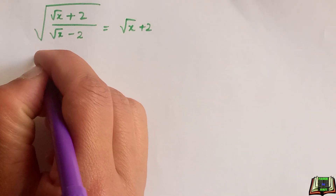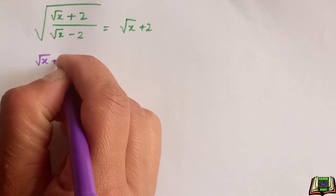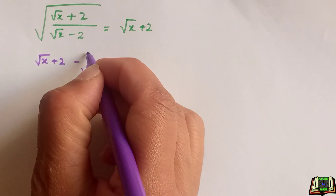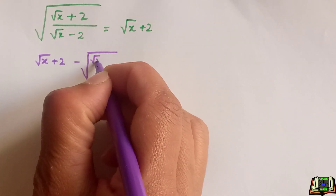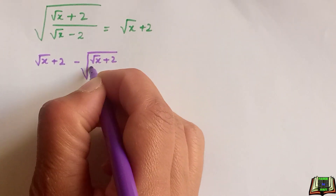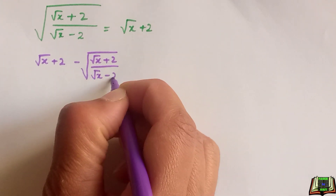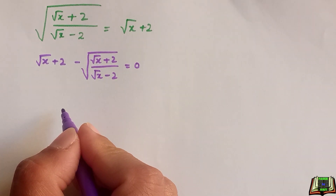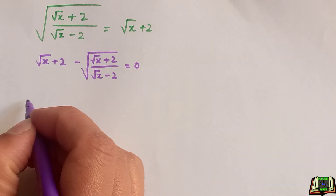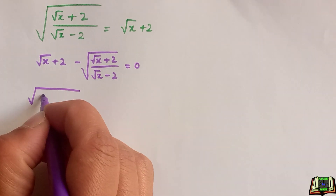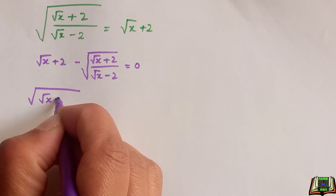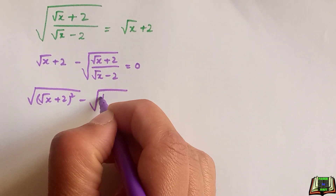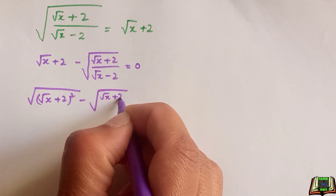We start with the root of (x plus 2), and we move this part to the right hand side so it becomes negative. We have the whole root of (root(x+2) divided by root(x-2)) minus the square root of (x plus 2) is equal to zero. We can write the square root of (x plus 2) in its equivalent value as the square root of (root(x+2)) squared, because the square and root cancel out, giving the same value.